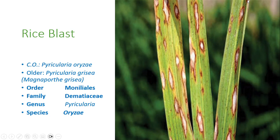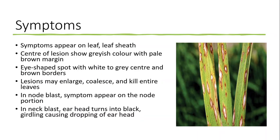Today we will talk about rice blast disease, which is a very important disease of rice all over the world. It is caused by Pyricularia oryzae; the older name of this causal organism is Pyricularia grisea. Pyricularia oryzae belongs to Order Moniliales and Family Dematiaceae. Now, what are the symptoms of rice blast?